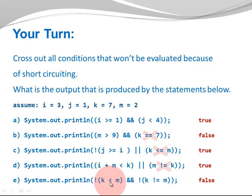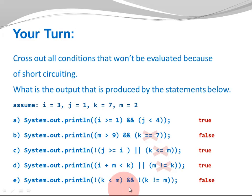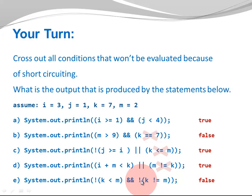Final statement: NOT(K < M) AND NOT(K != M). K < M means 7 < 2, which is FALSE. The NOT operator turns FALSE to TRUE. TRUE AND something still requires evaluating the right-hand side: K != M means 7 != 2, which is TRUE. But there is a NOT, so NOT TRUE is FALSE. TRUE AND FALSE evaluates to FALSE.